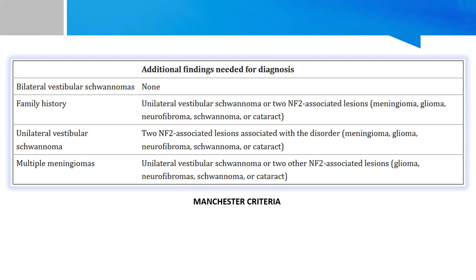This is the Manchester criteria for the diagnosis of NF2 on imaging. It shows that if the patient has bilateral vestibular schwannomas, no additional finding is needed. If there is a family history of NF2, then a unilateral vestibular schwannoma or two NF2-associated lesions — which include meningioma, glioma, neurofibromas, schwannomas, or cataracts — are sufficient for diagnosis. In unilateral vestibular schwannomas, two NF2-associated lesions such as meningiomas or gliomas are sufficient. And if the patient has multiple meningiomas, then either a unilateral vestibular schwannoma or two other NF2-associated lesions are needed.